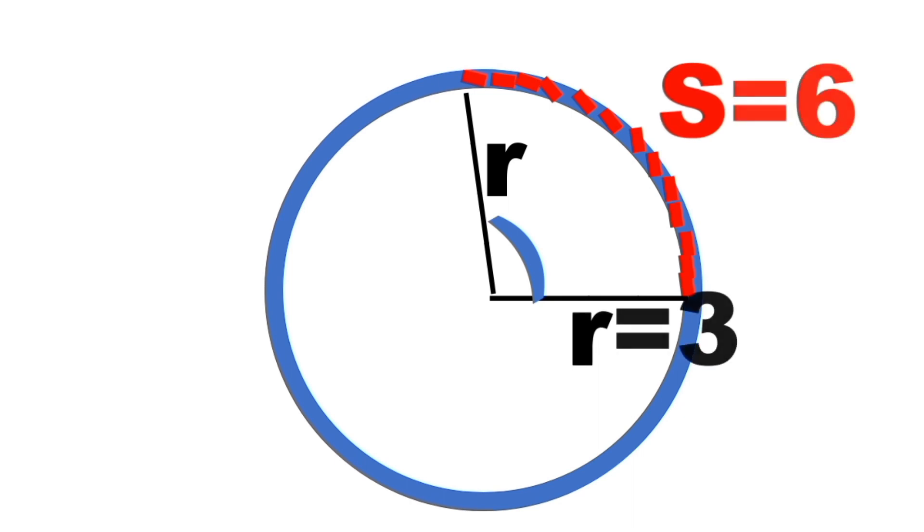For example, if the arc length is equal to 6 and the radius is equal to 3, to find the measurement of the angle in radians, we just simply divide the arc length by radius, or S over R. So 6 divided by 3,